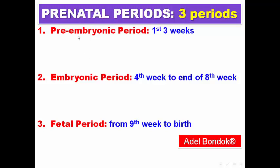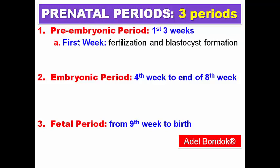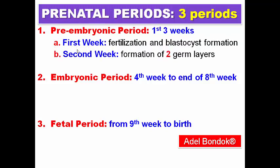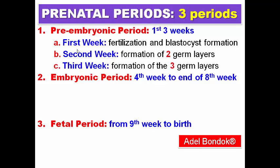The pre-embryonic period covers the first three weeks. The first week is fertilization and blastocyst formation. The second week is the formation of the bi-laminar plate, or two germ layers. Remember: second week — two germ layers. Third week — three germ layers.